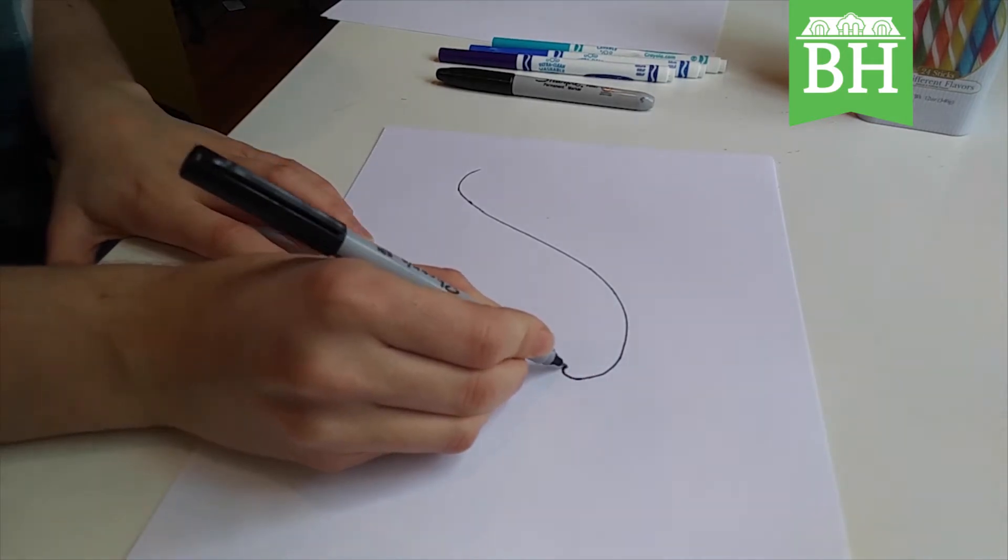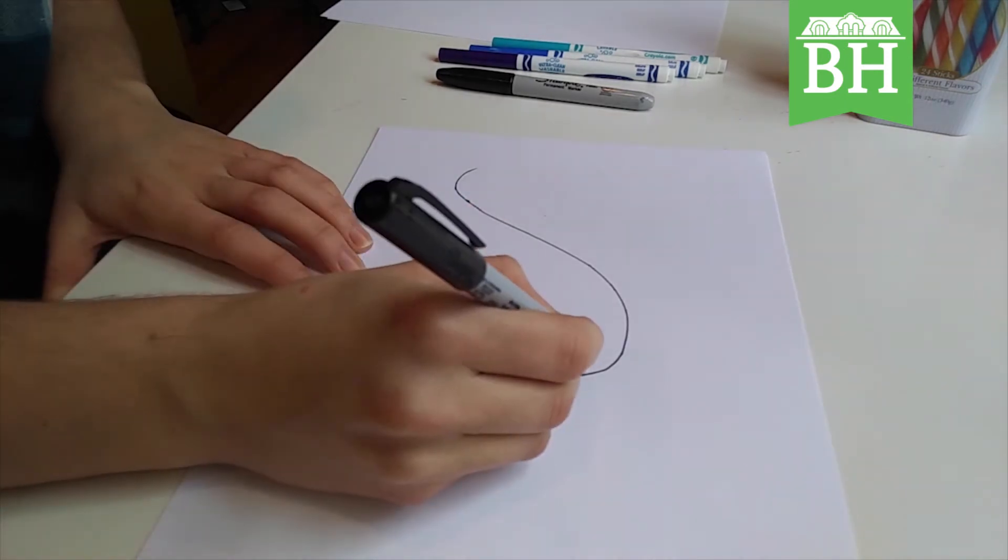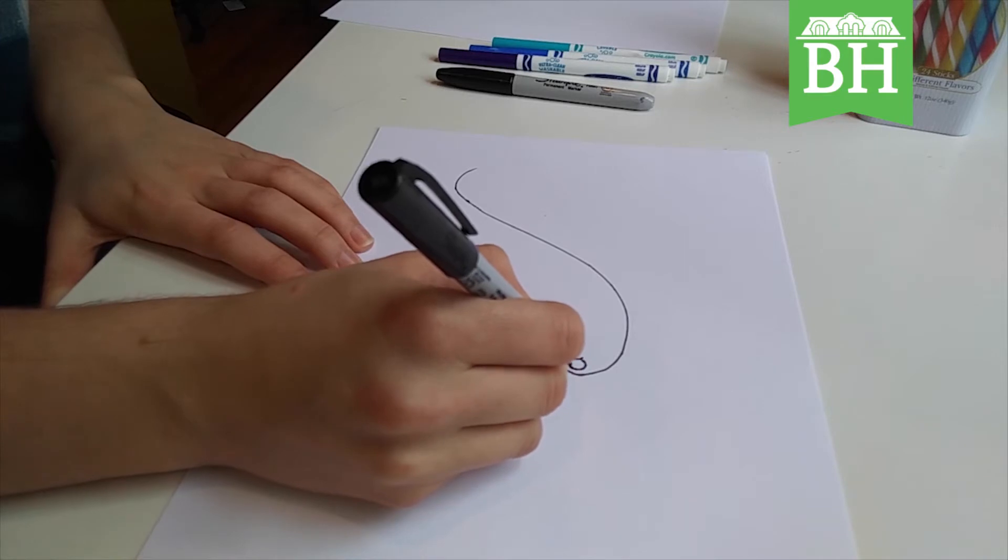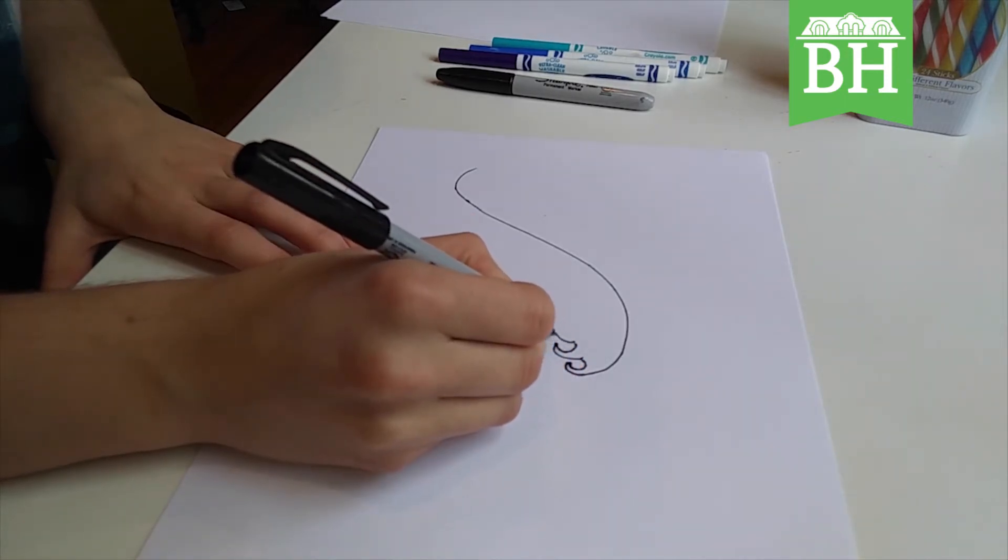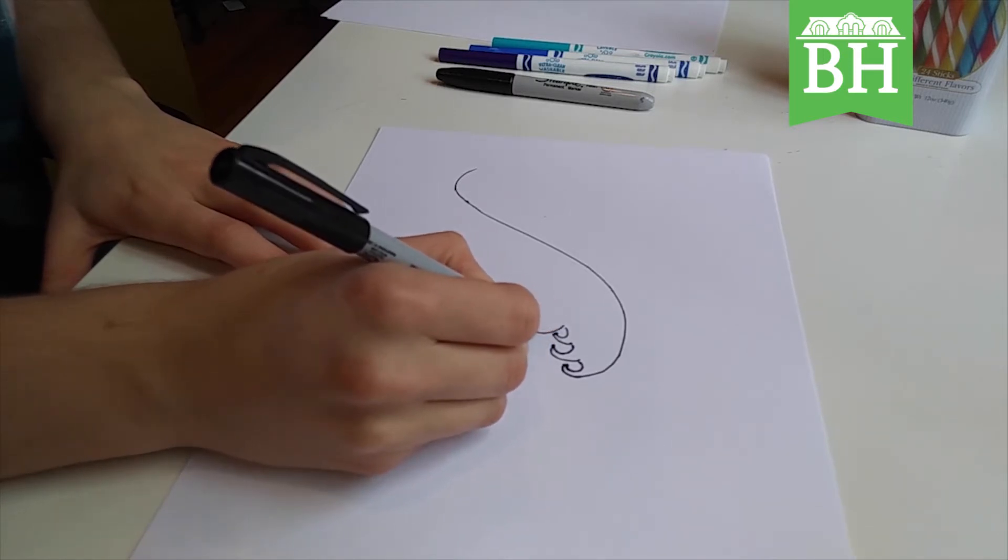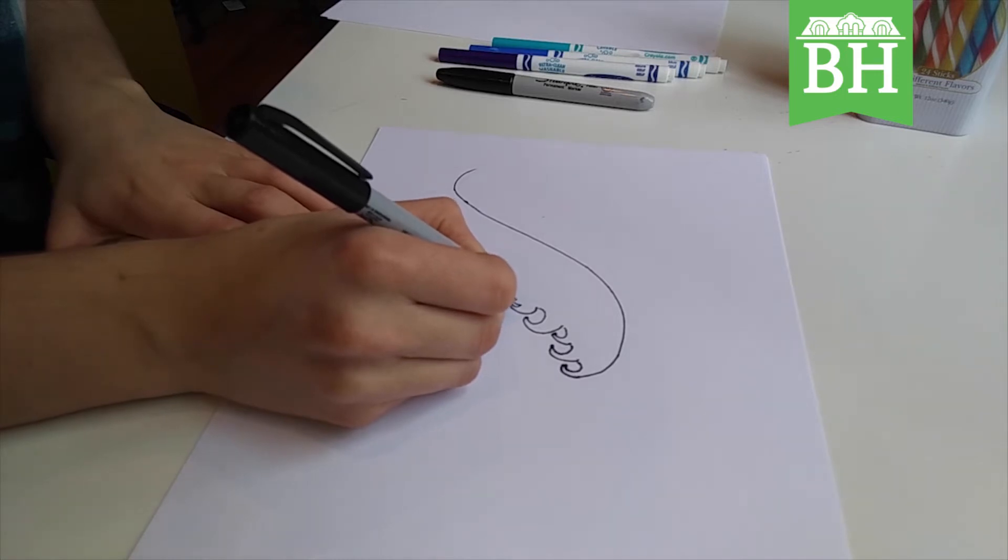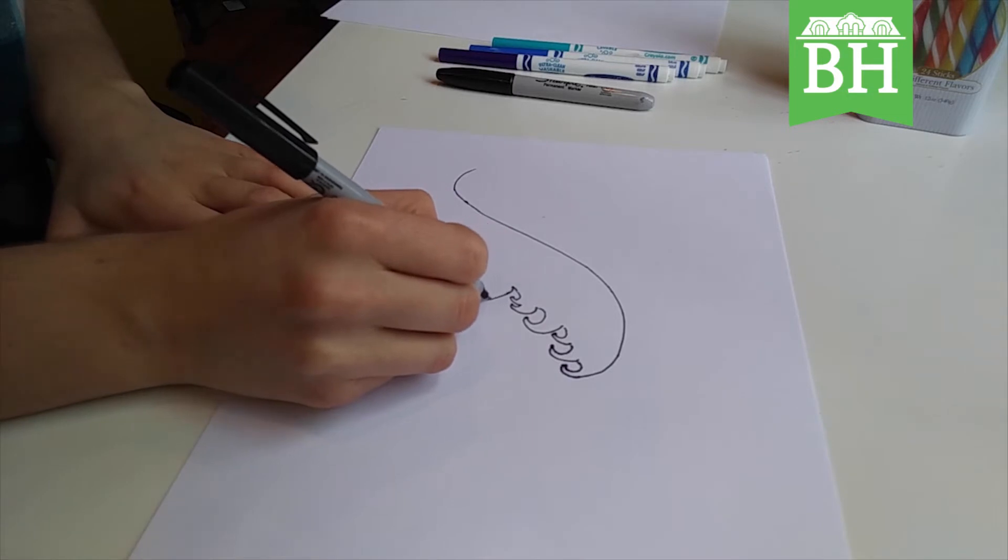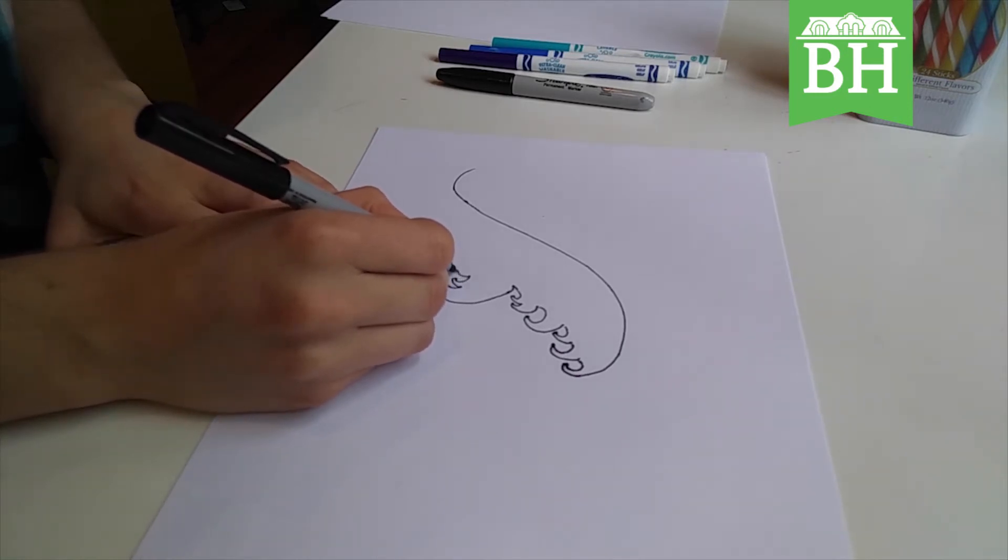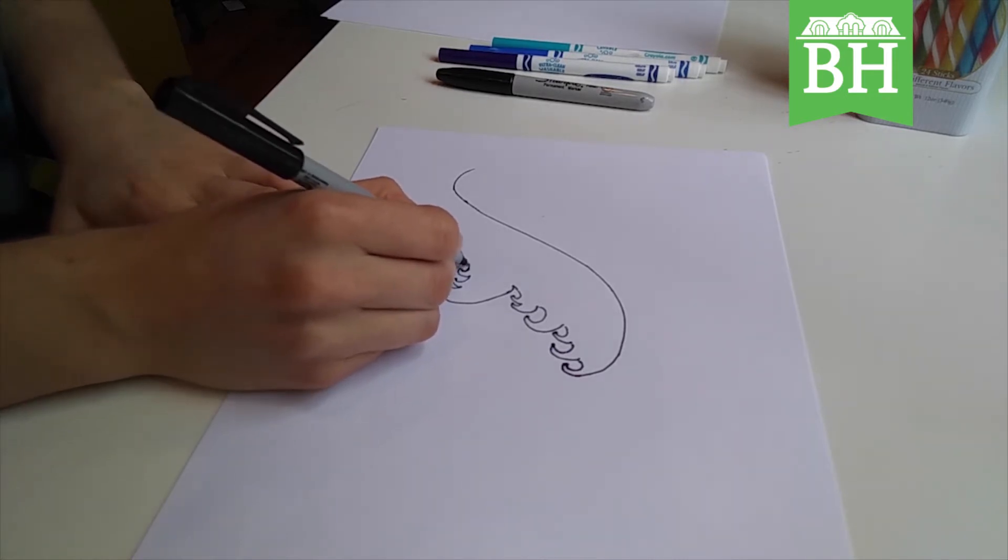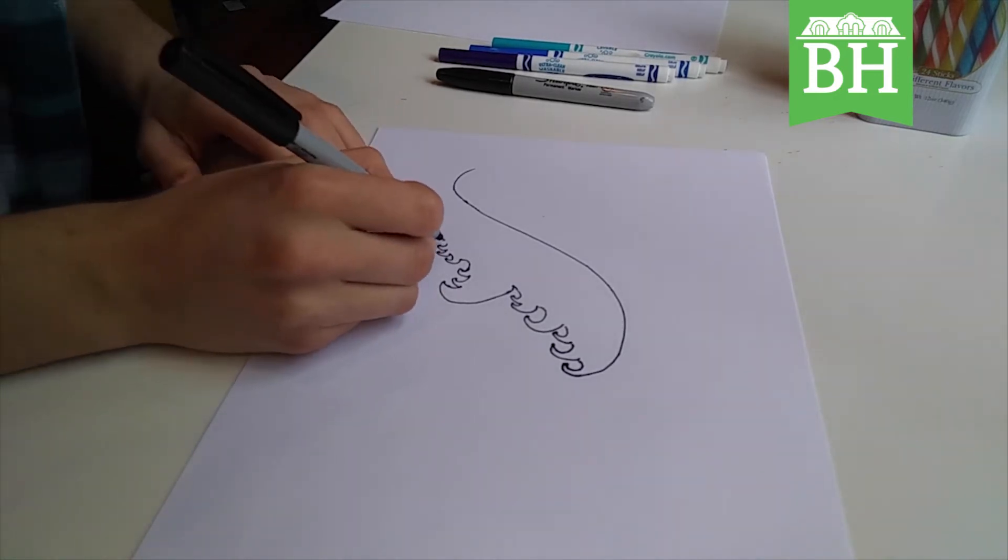Then I'm going to go to the tip of that hook, and I'm going to draw another hook that goes in the opposite direction. At the base of that first hook, I'm going to draw another hook, then another smaller hook, larger hook. I want to add more hooks. I can go in on those hooks.